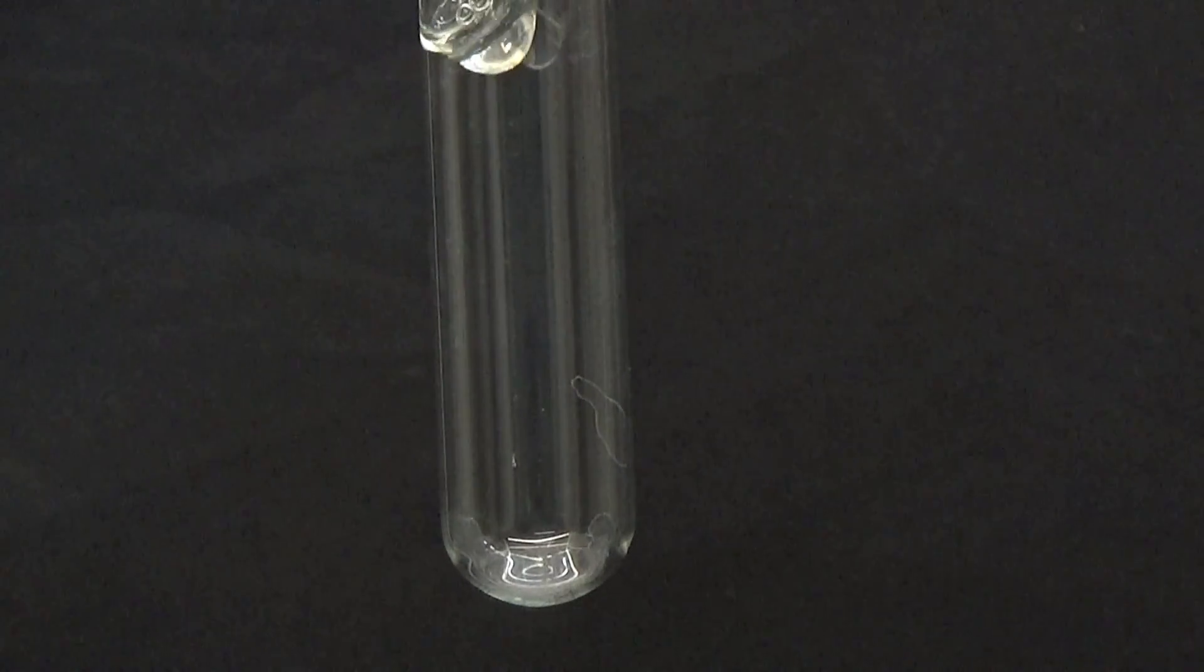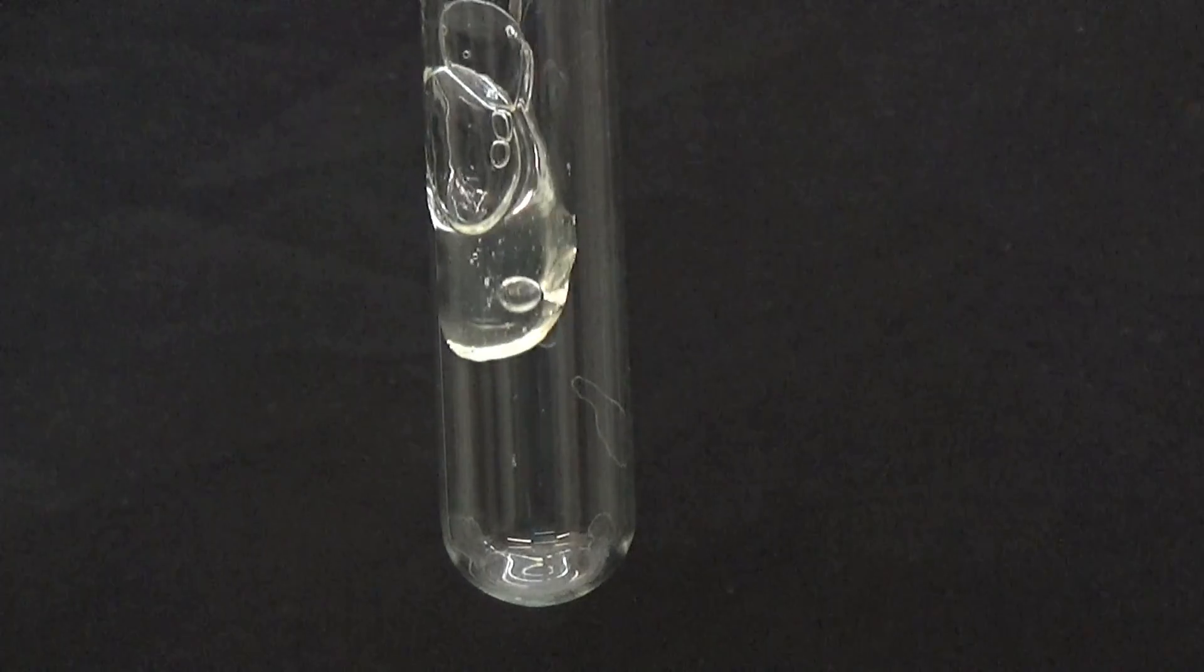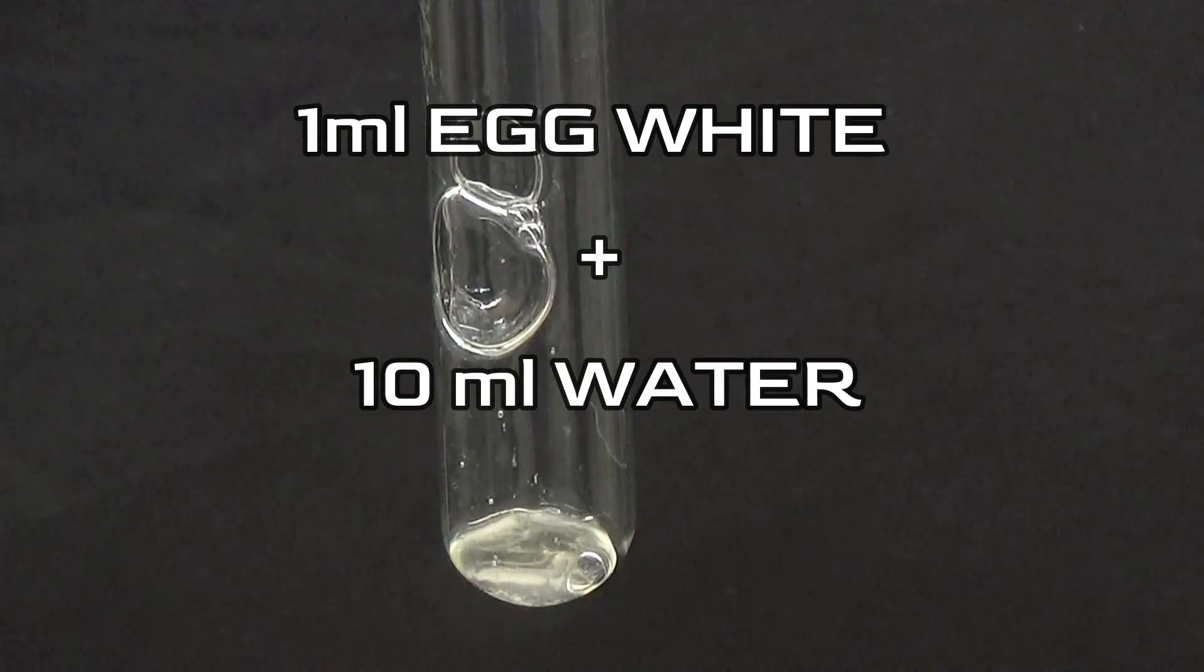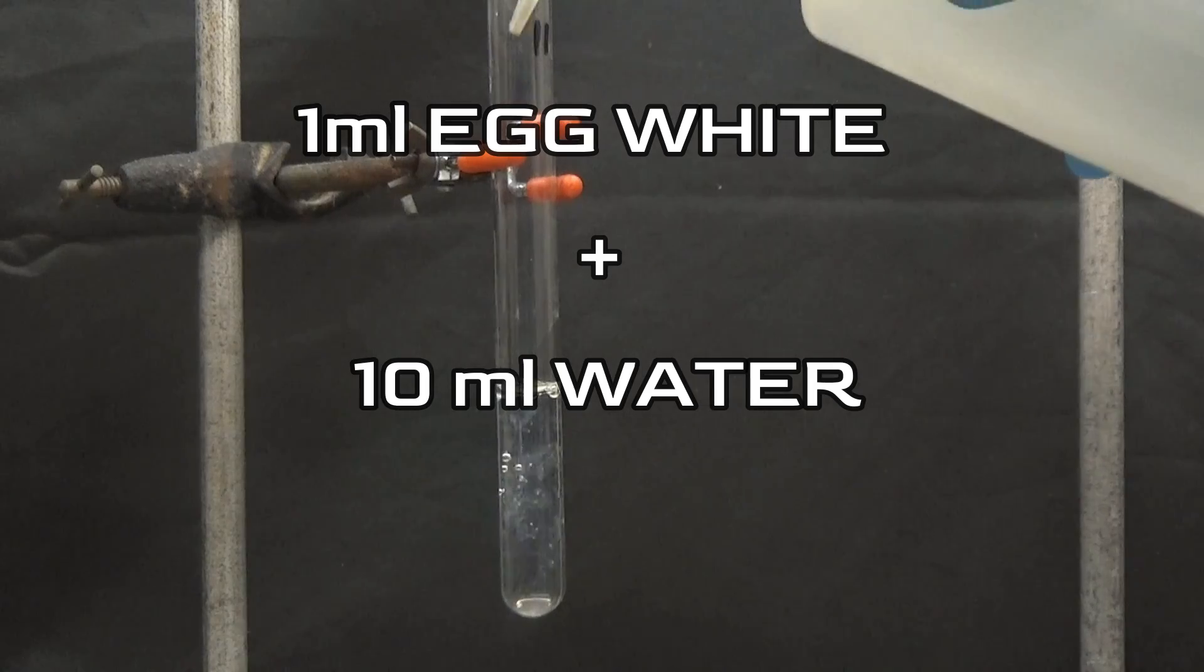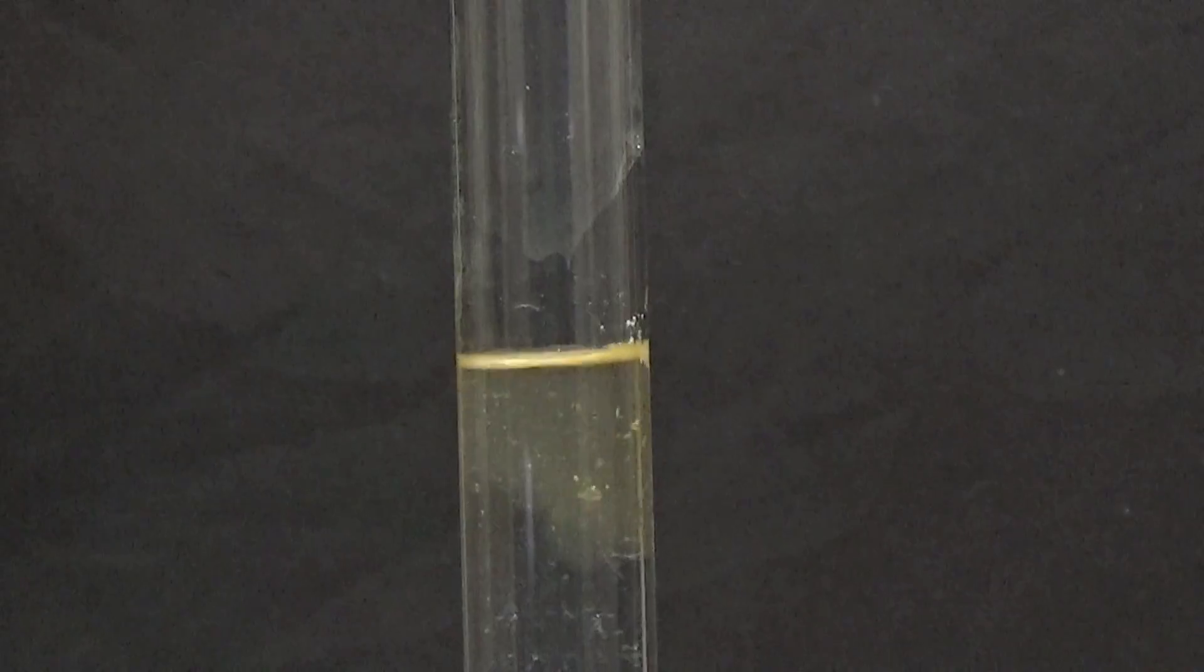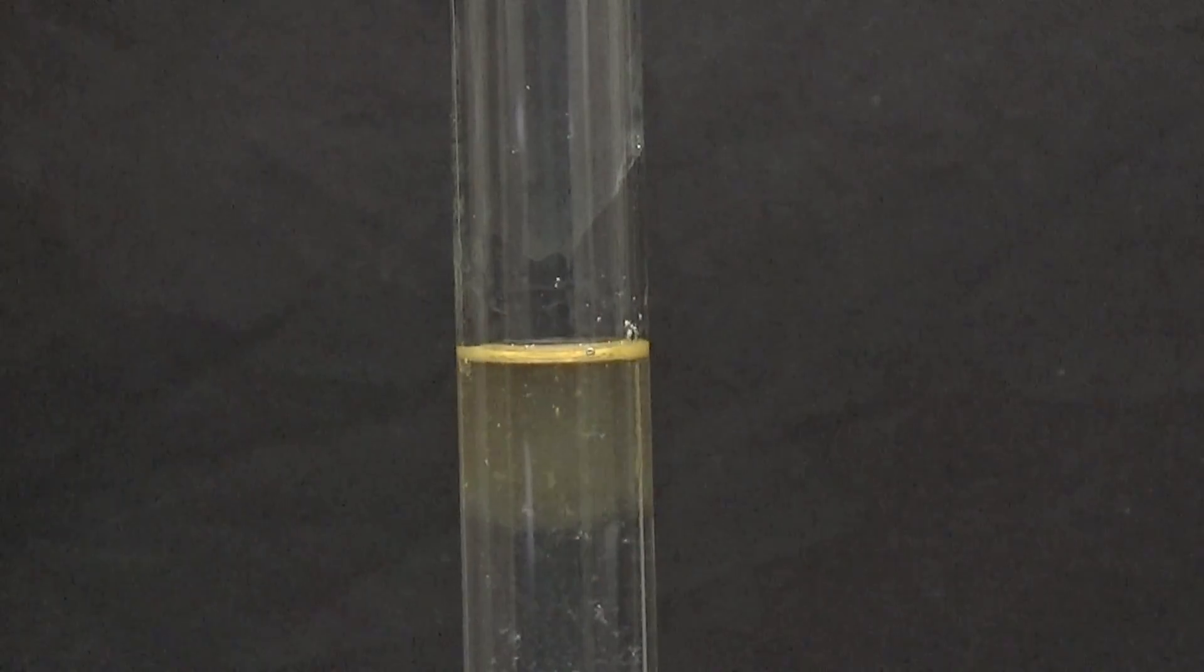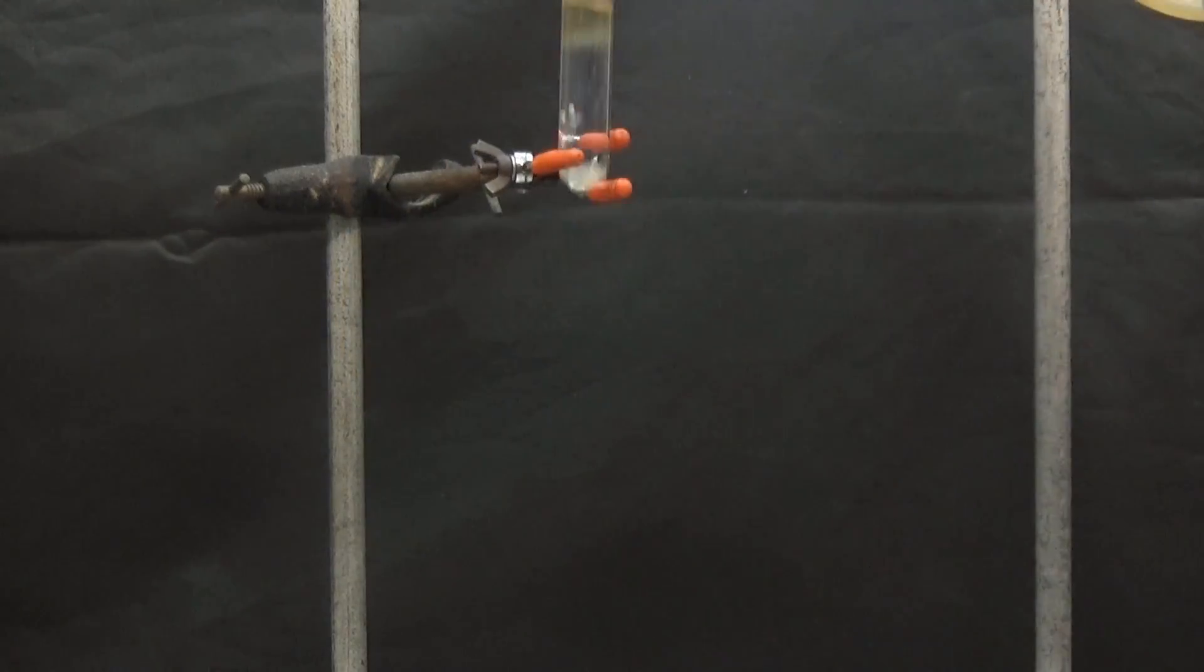We are performing this test with egg white. We add 1 ml of egg white to a tube and mix it with 10 ml of distilled water. 6 drops of 2% ninhydrin solution are added and placed in a hot water bath.